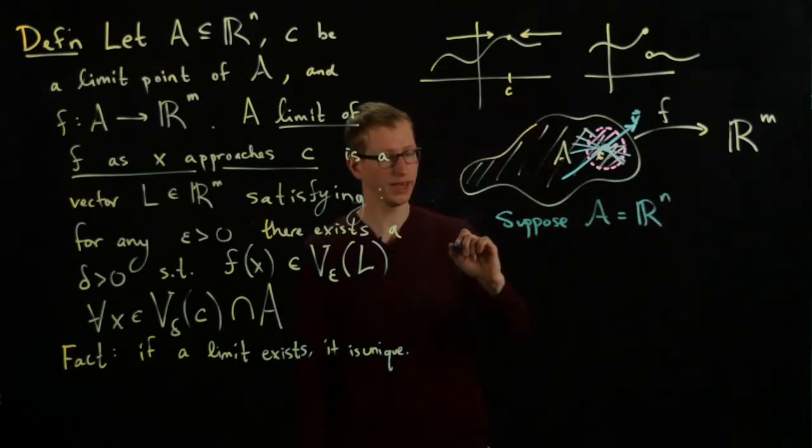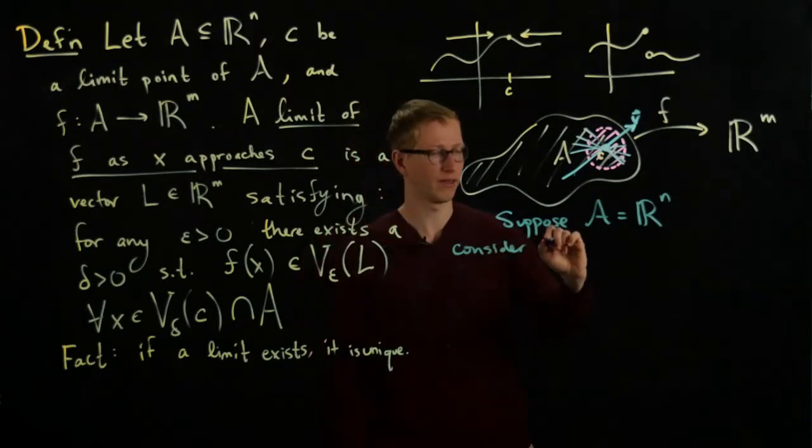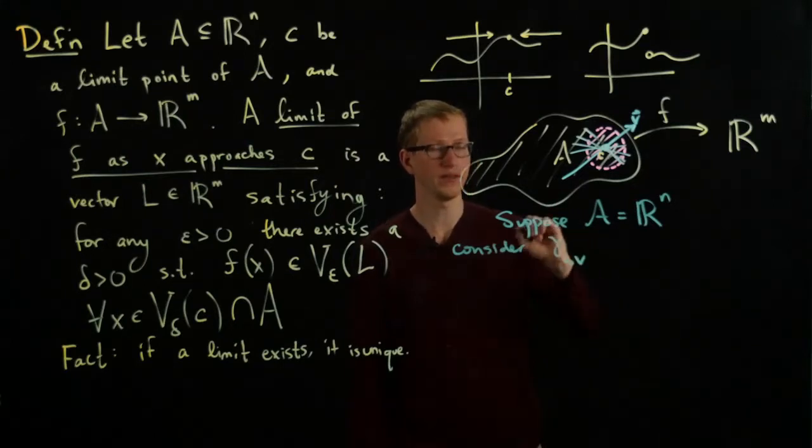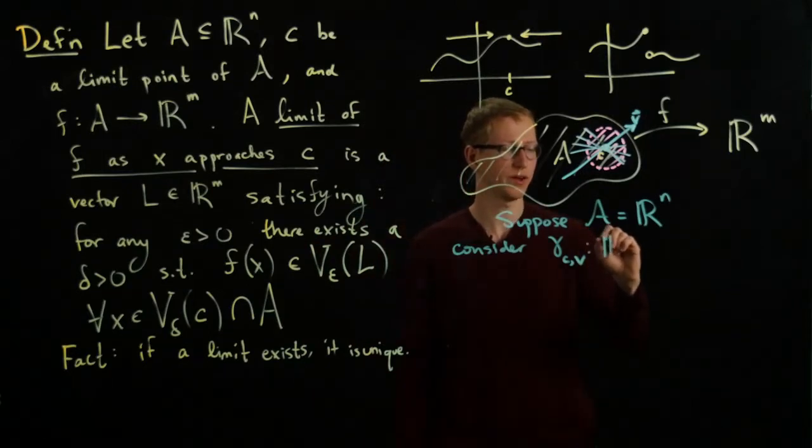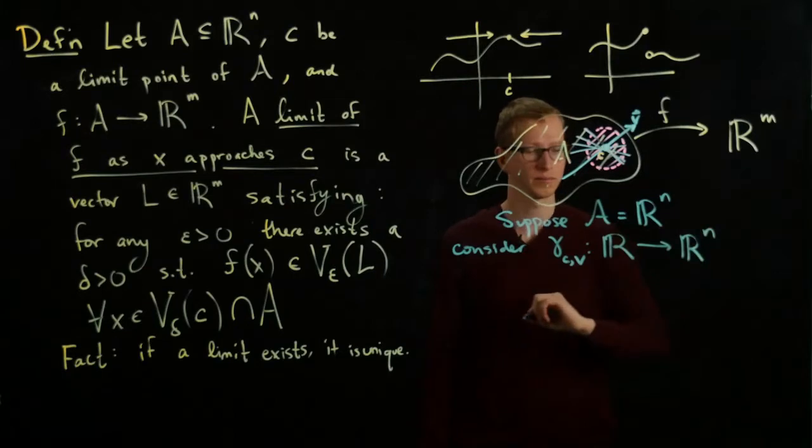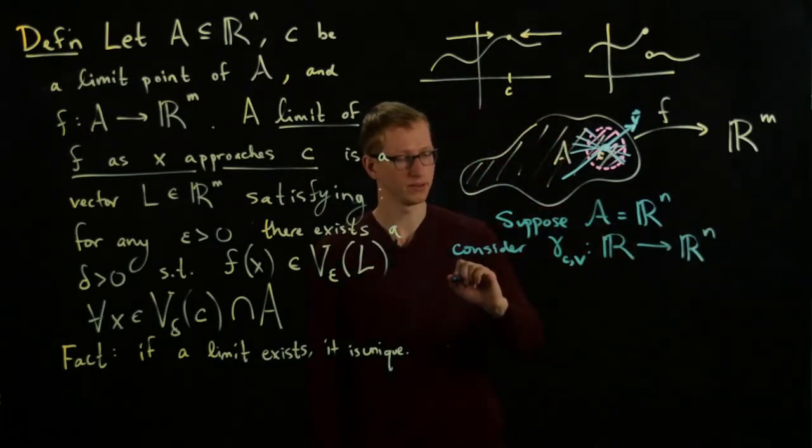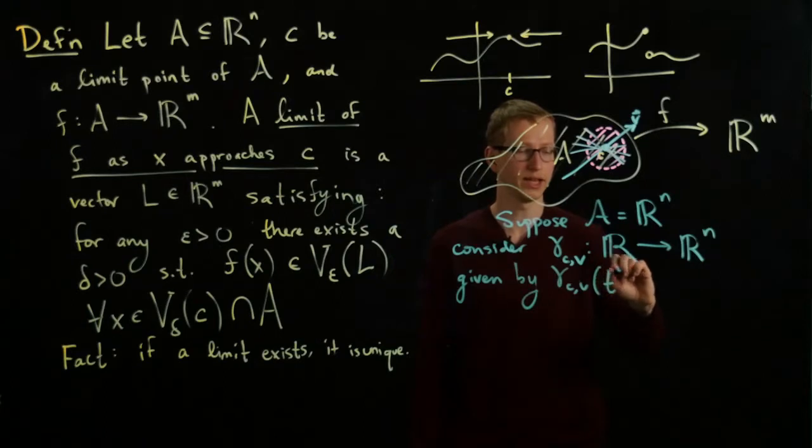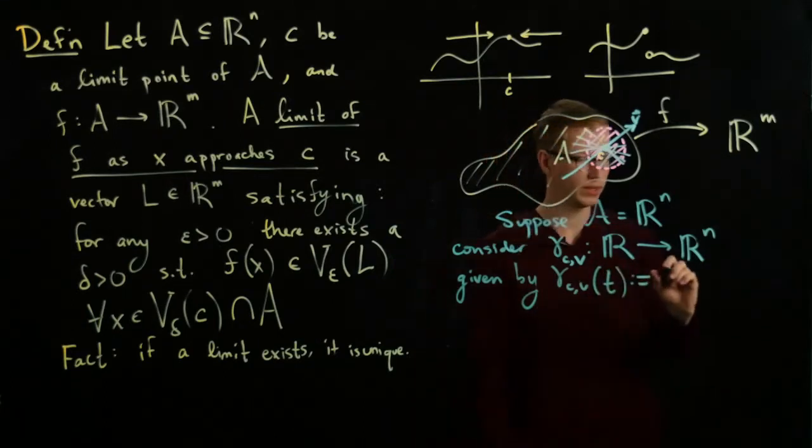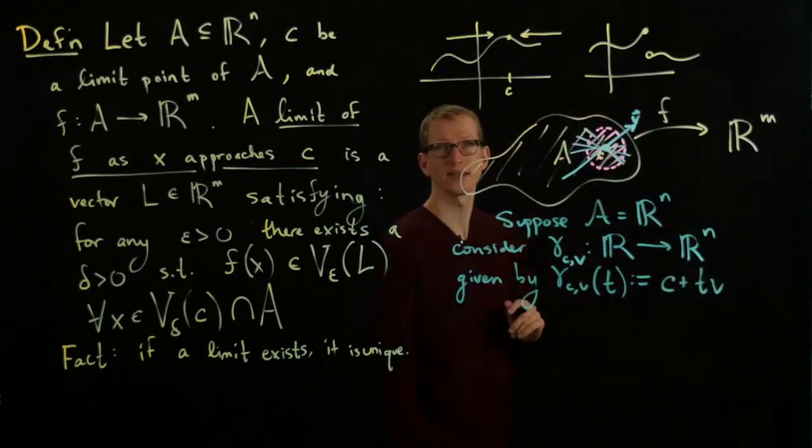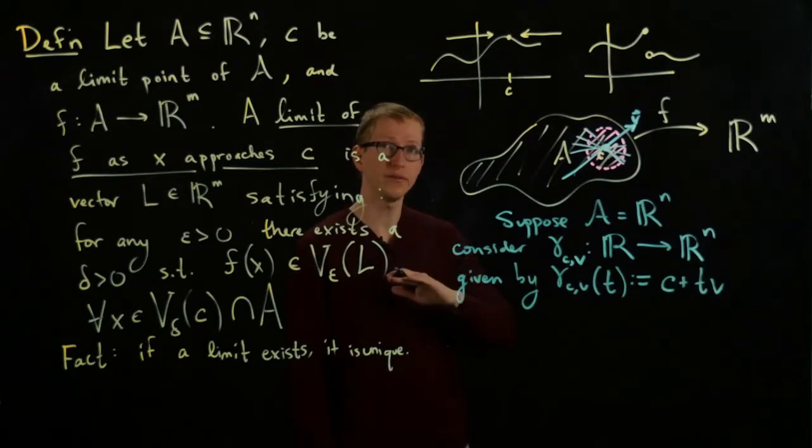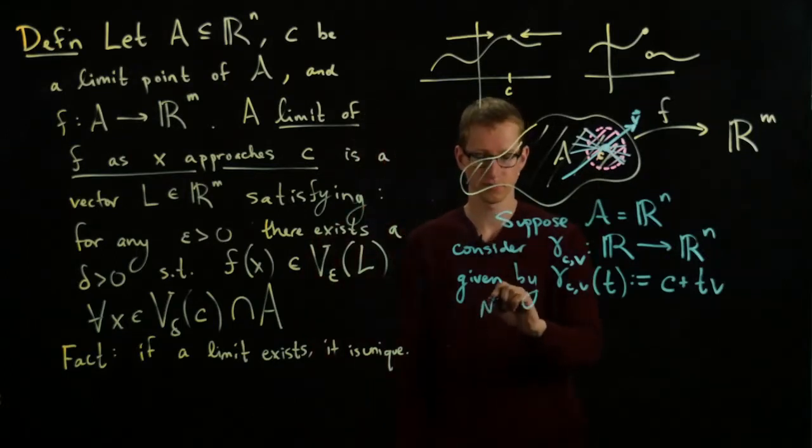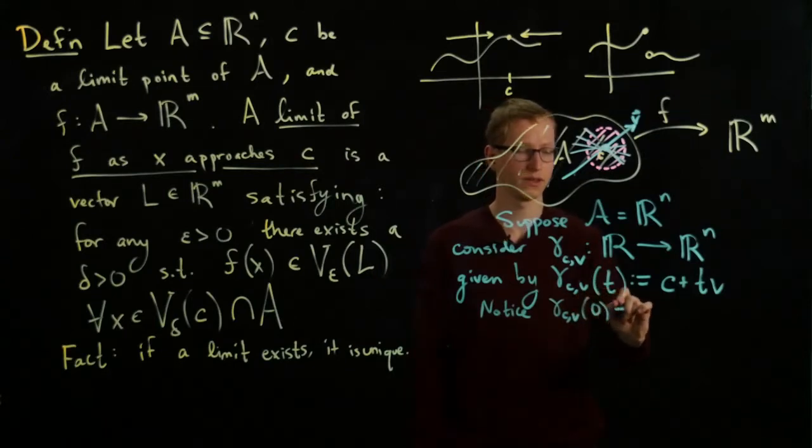So the function, and let's now say that A is actually all of R^n, so suppose that A equals R^n itself, and consider the path that goes through C, the path gamma that goes through C in the direction V. So this will be a function from R to R^n, and it's given by gamma_C,V applied to the element T is C plus T V. And you can check that at T equals 0, I get exactly the point C, and for all future times, this line lies along the straight line trajectory through C.